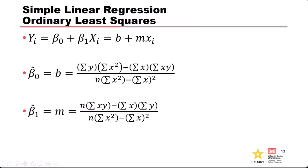Here are the analytical equations for ordinary least squares — you may vaguely remember seeing these in math class. For OLS, the intercept beta zero is calculated using the sum of Y values, sum of X squared, sum of X, and sum of X times Y. These are the explicit analytical solutions you can use to solve any simple ordinary least squares problem with just one independent explanatory variable.